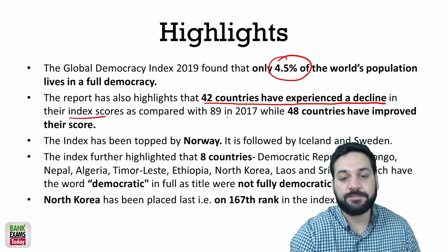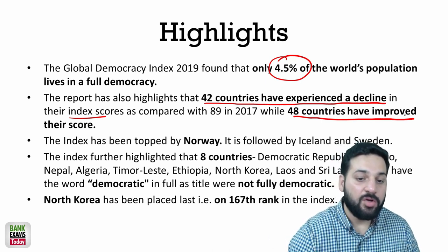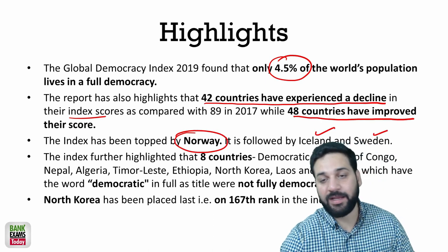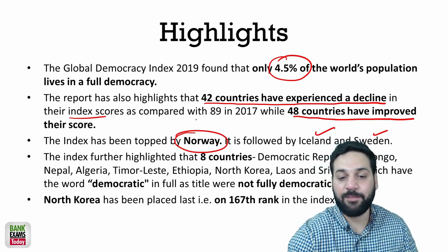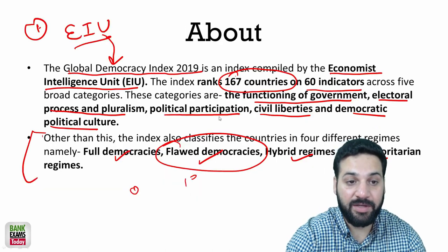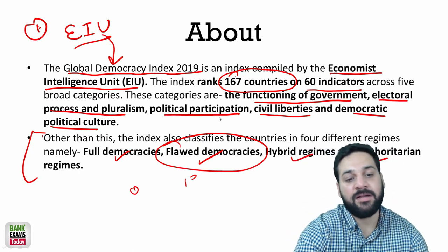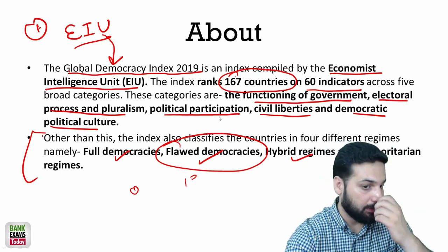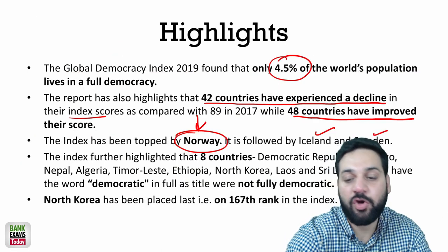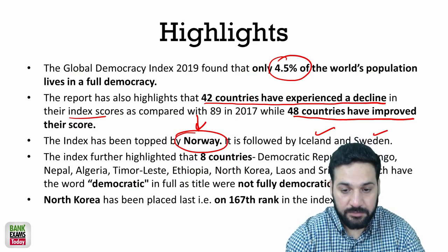42 countries have experienced a decline in their index score, while 48 countries have improved their score. Norway is at the top, followed by Iceland and Sweden. The key things to remember are: EIU ranks 167 countries, and the four categories of democracies — full, flawed, hybrid, and authoritarian — are all important.